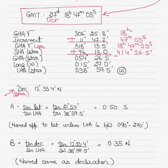GHA cannot be more than 360°. Anytime the GHA or LHA crosses 360°, subtract 360° from it. Subtracting 360° from 414° 26.5' gives 54° 26.5' as the GHA star. That is the GHA we will use.